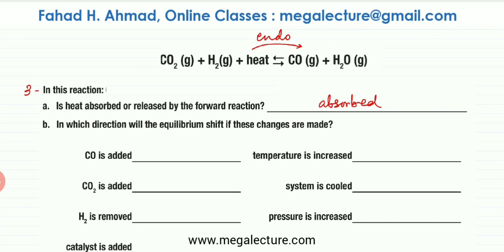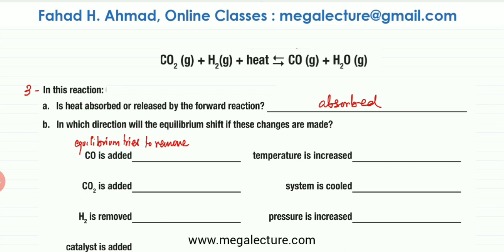They're asking where the equilibrium will shift if the following changes are made. The first one: CO is being added. The equilibrium is going to try to remove CO. The way CO can be removed is if the backward reaction is favored so that all the CO gets converted back into reactants. So the equilibrium shifts to the left-hand side.